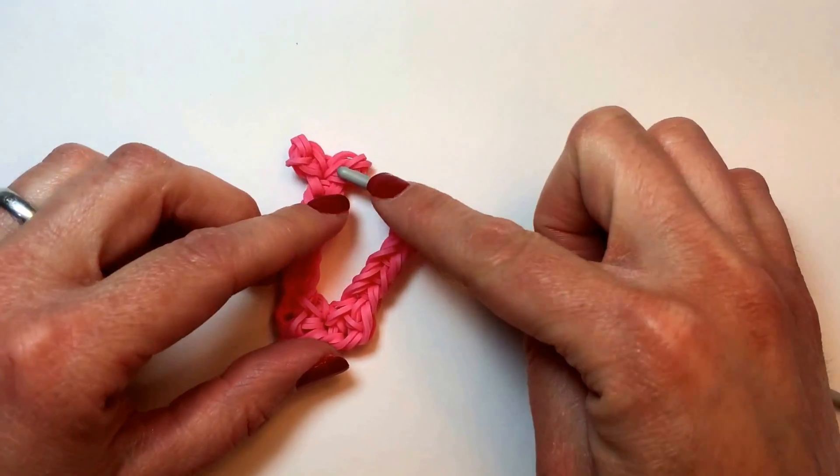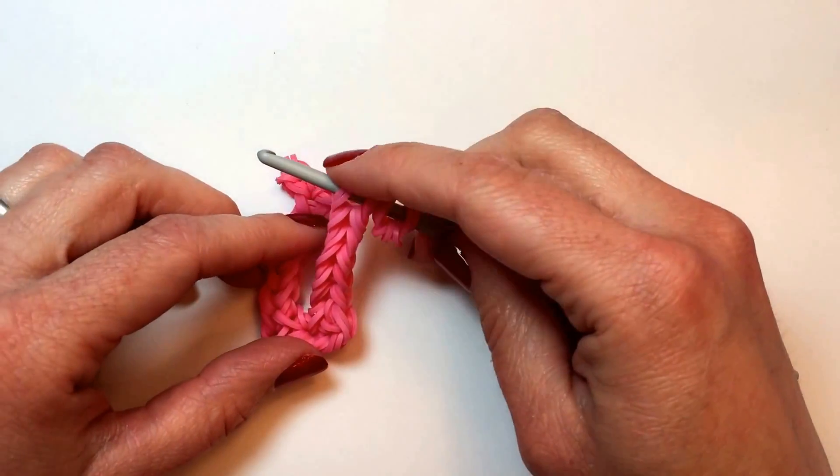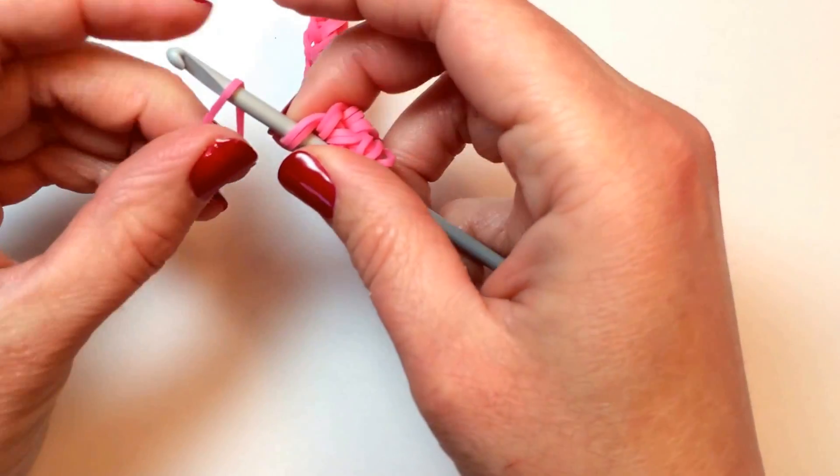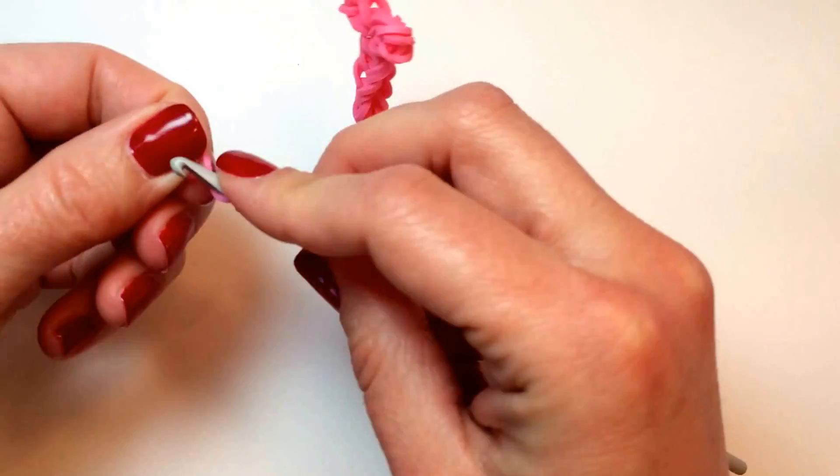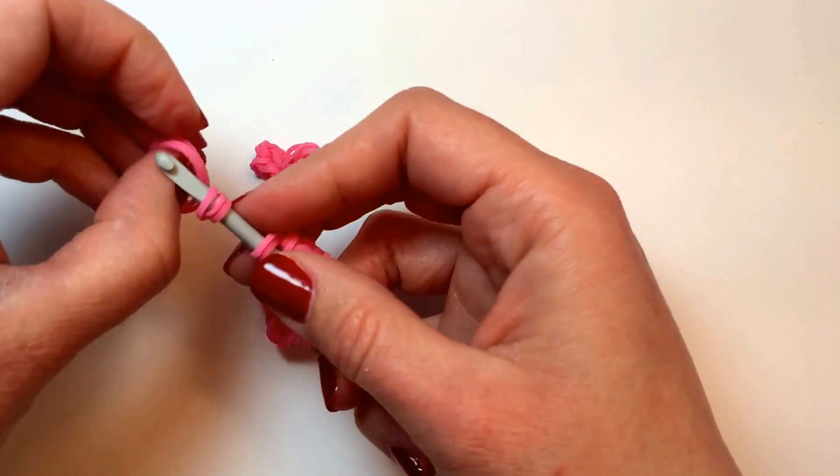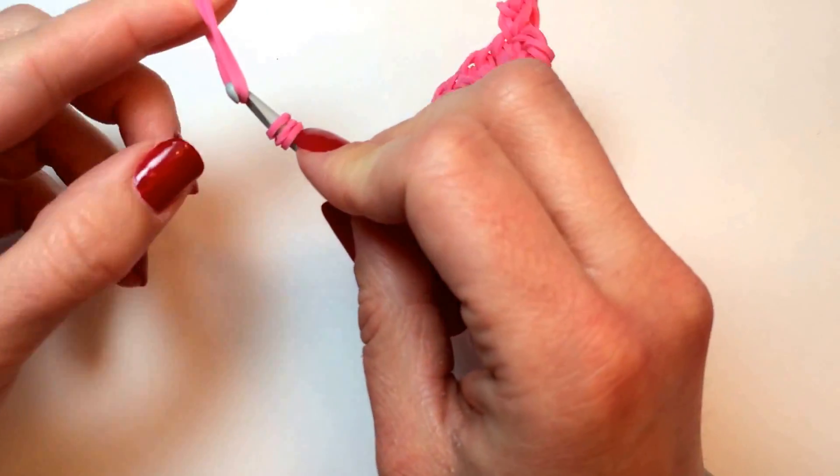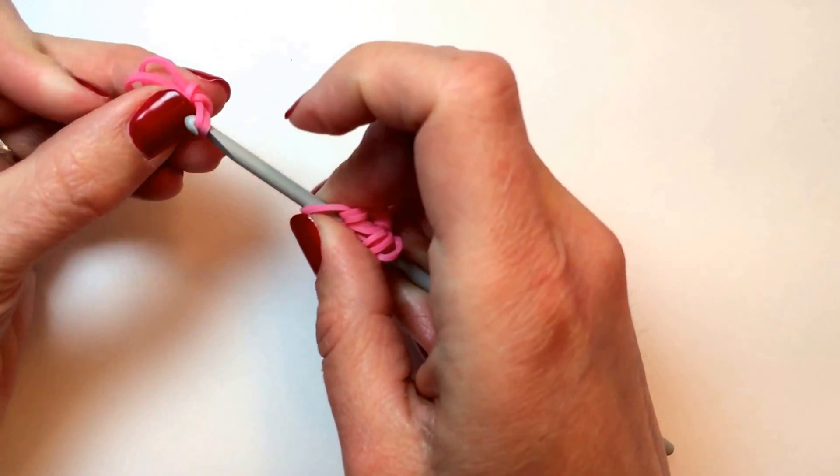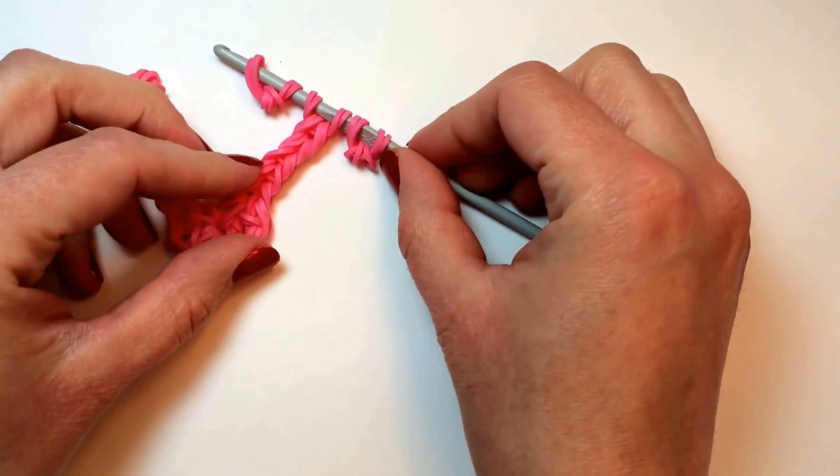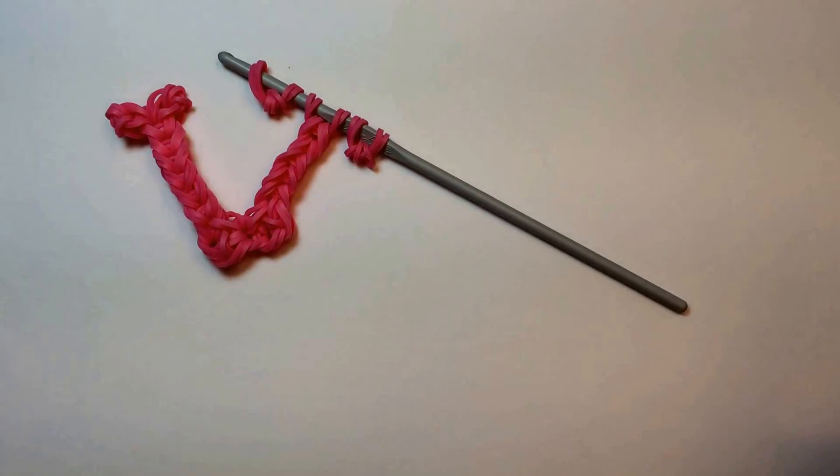We have one side. We need to make one more of these little fancy bits. Wrap a rubber band around three times, then take two, put them on your hook, push that to the center, and bring it back on so that your hook looks like this now.